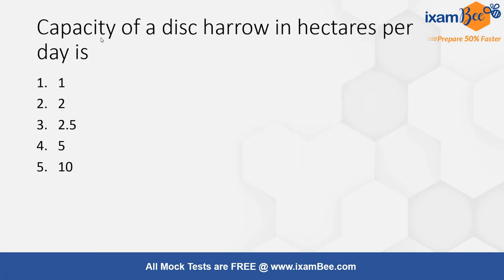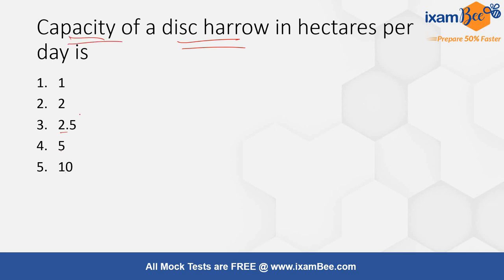The next question is: the capacity of a disc harrow in hectares per day is — options are 1, 2, 2.5, 5, or 10. For a disc harrow, the correct answer is option 3, that is 2.5 hectares per day.